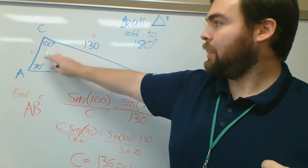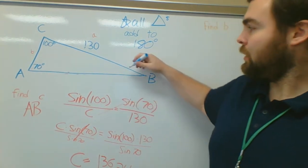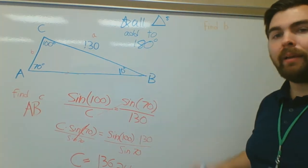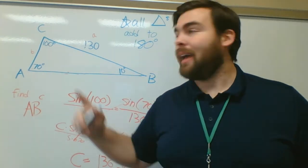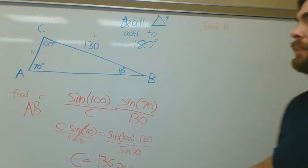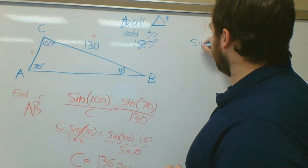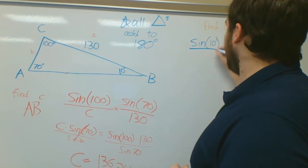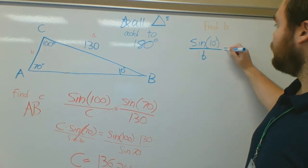So, if this is 100, this is 70, together they make 170. So, this angle, I have to know, is 10 degrees. That angle is 10 degrees. So, now I know capital B. I can find out what lowercase b is. So, I know I want to find sine of capital B, so sine of 10 degrees over lowercase b. That's what I'm trying to find.